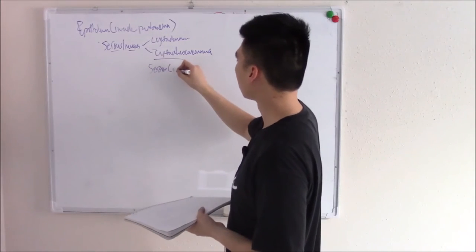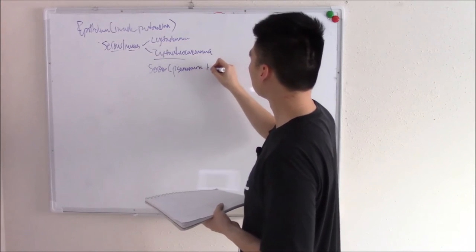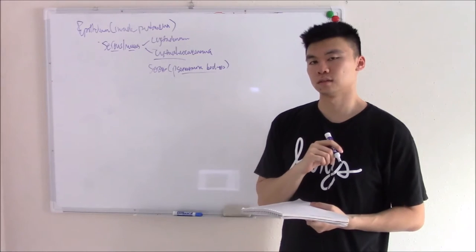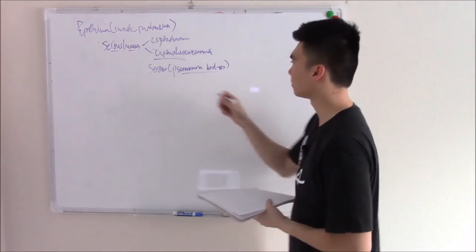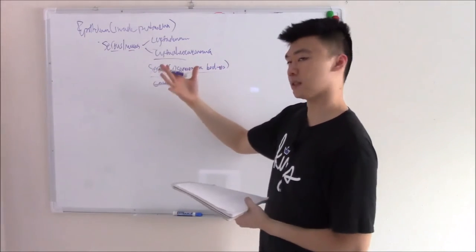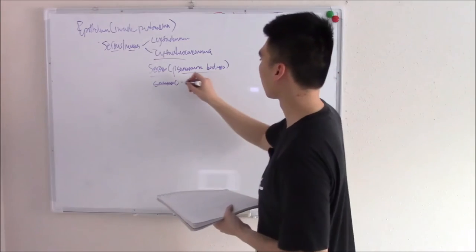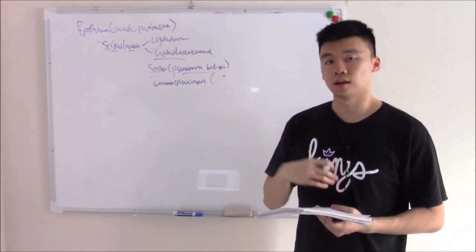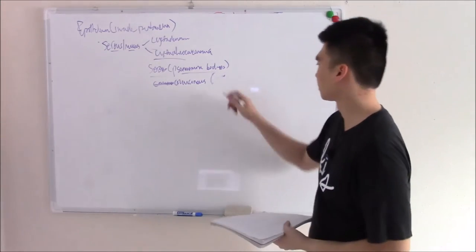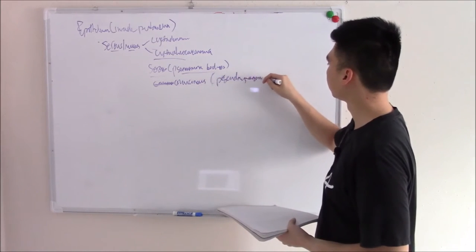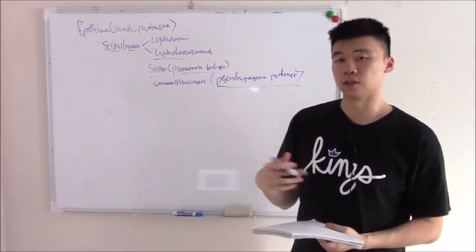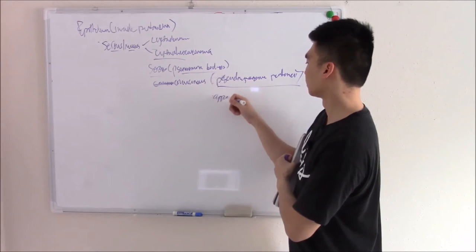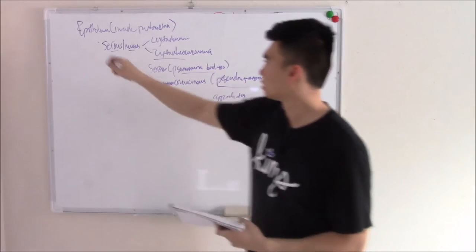Cystadenocarcinoma, whether serous or mucinous, is important to know. If it's serous, it's associated with psammoma bodies - we just talked about that in endometrial cancer. Mucinous cystadenocarcinoma can cause pseudomyxoma peritonei - mucus in the peritoneal space. If that phrase sounds familiar, tumors in your appendix can do the same thing.